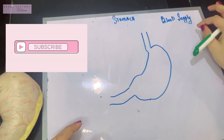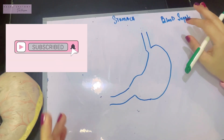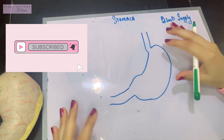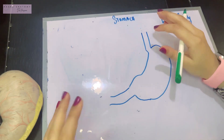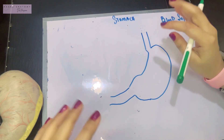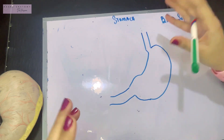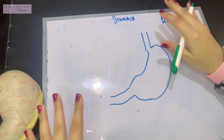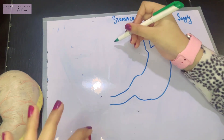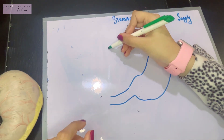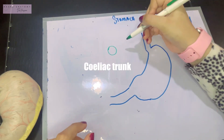Let's go ahead and discuss the blood supply of the stomach. The arteries involved in supplying the stomach come embryologically with the blood supply of the foregut, because the stomach is a derivative of the foregut. And what was the main artery of the foregut? That artery was the celiac trunk.